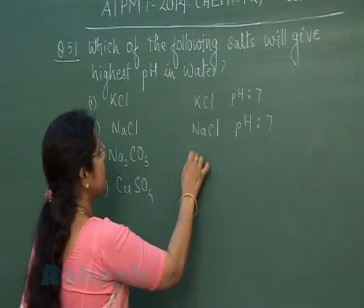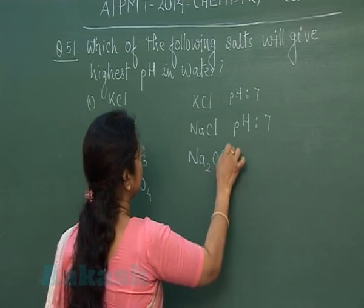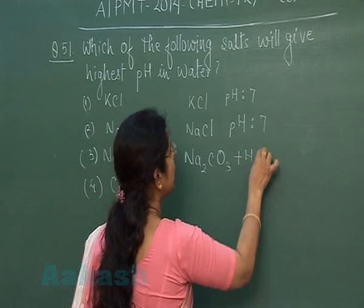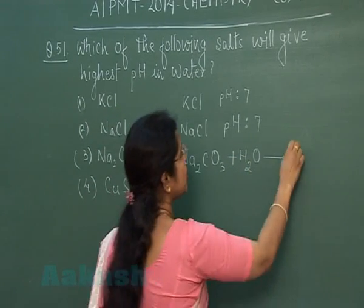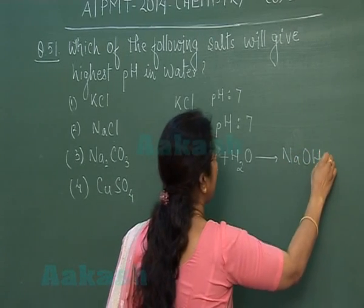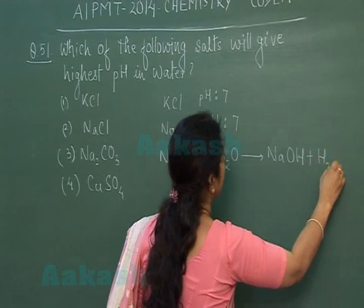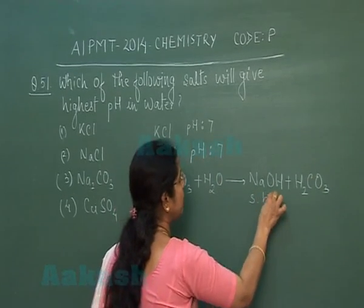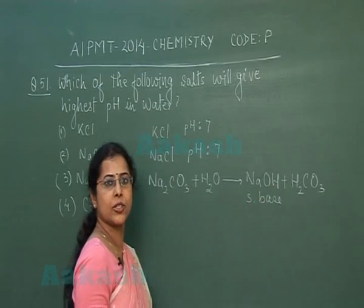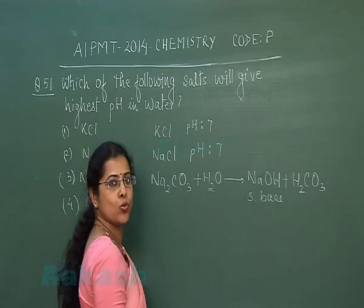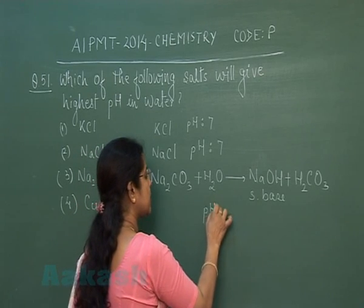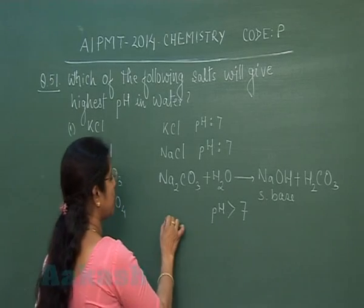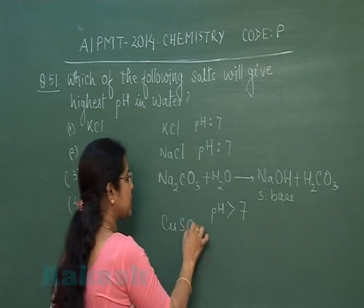The third option is sodium carbonate. When dissolved in water, it hydrolyzes giving strong base NaOH and weak acid carbonic acid. Since the base is strong and the acid is weak, the nature of the base dominates, resulting in a basic solution. So pH will be more than 7.